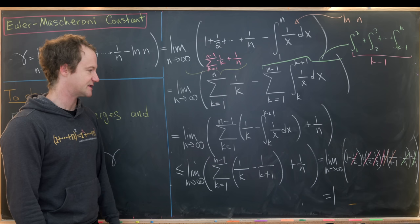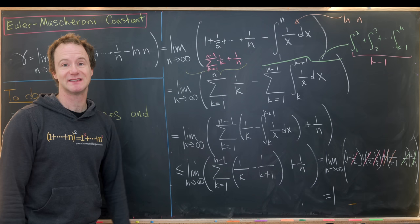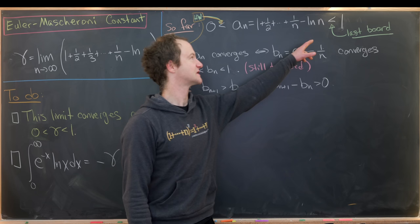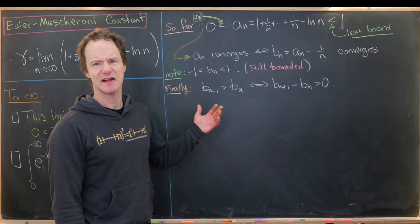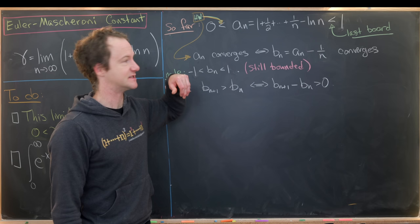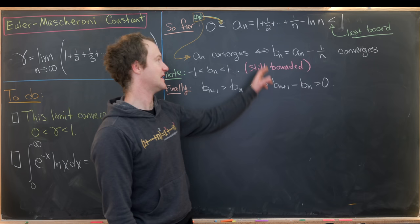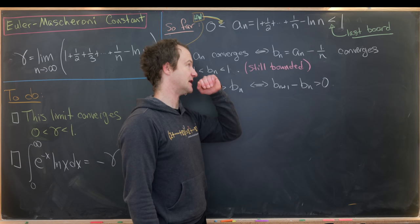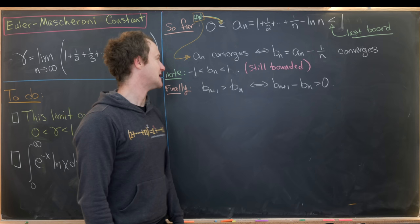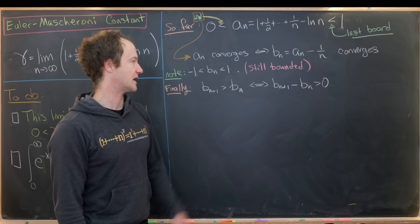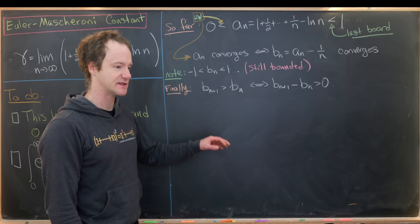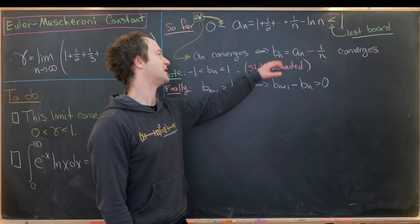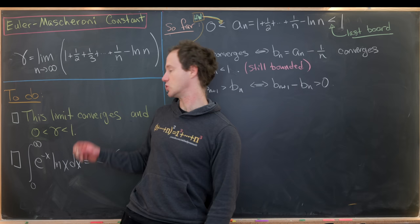We rename the terms of the sequence a_n. We showed every term is less than 1, and as a homework exercise you can show every term is greater than 0. We introduce b_n = a_n − 1/n, which also converges if and only if a_n converges. b_n is bounded between −1 and 1. We'll show it's an increasing sequence, so by the monotone sequence theorem it converges, and therefore a_n converges — achieving our first goal.